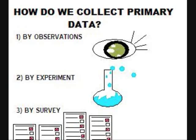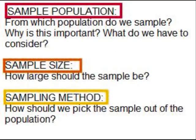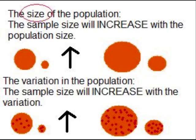When it comes to decisions involved in sampling, there are three key considerations: sample population, sample size, and sampling method. For sample population, ask which population we are sampling from. For sample size, ask how large it should be — too large costs more money, too small weakens the inference to the population. For sampling method, ask how we should pick the sample. The size of the population matters: the sample size will increase with the population size.